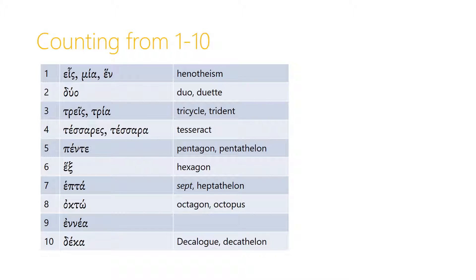Number seven is hepta, from which French derives the word set. And if you are a real fan of track and field, you may be familiar with the heptathlon, which is a collection of seven events performed together.